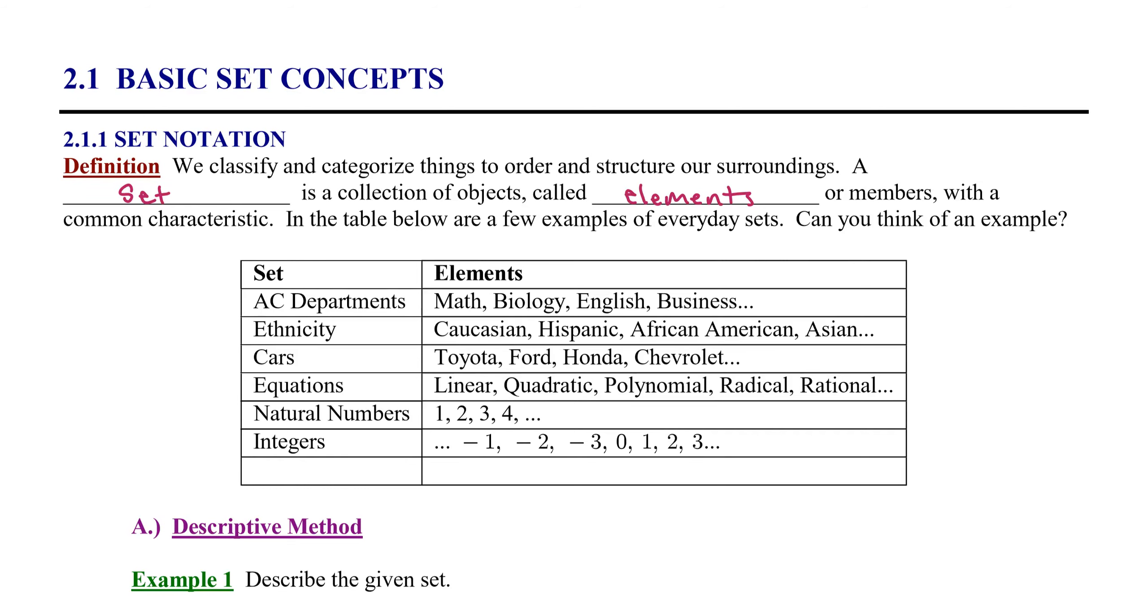In the table below we have a few examples of everyday sets. For example, let's look at the set of Amarillo College departments. The members or elements of that set would include the math department, the biology department, the English department, the business department, so on and so forth. Notice the ellipsis indicates that the elements are not complete. There are other members of that set.